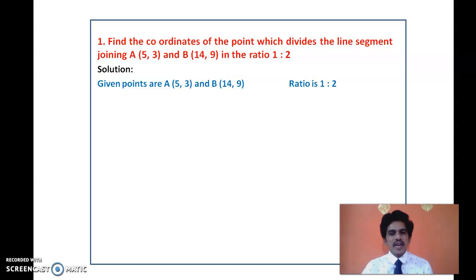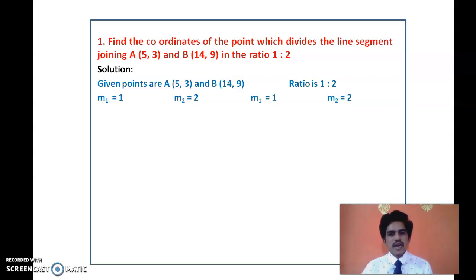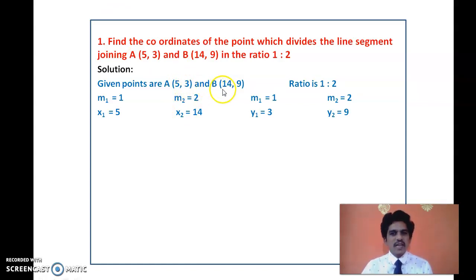Let us write the information: A(5, 3), B(14, 9), ratio 1:2. Using the layout technique, write M1 = 1, M2 = 2 twice. Below the first pair write x1 = 5, x2 = 14, and below the second pair write y1 = 3, y2 = 9. Keep these values in mind as we substitute into the formula.